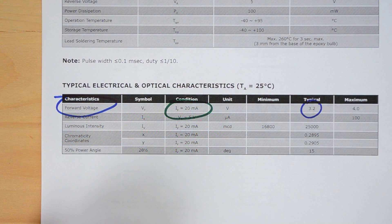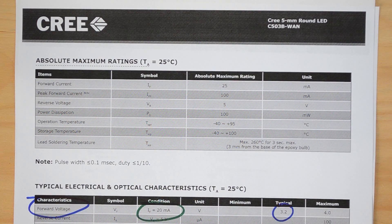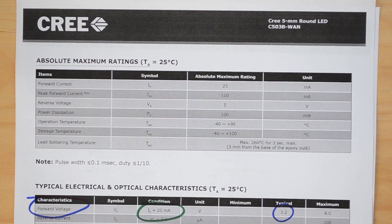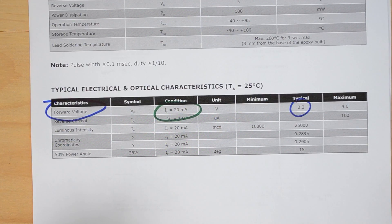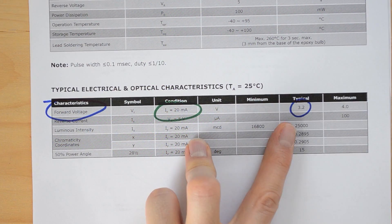This also gives you maximum ratings, which tells you not to go above a certain value. The forward current maximum rating for this one is 25 milliamps. You're not going to want to set up the LED so that it's drawing more than 25 milliamps, but you do want to try to set it up with the characteristics that we've got circled here.